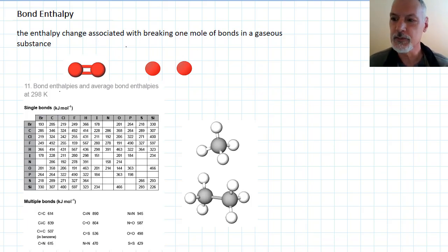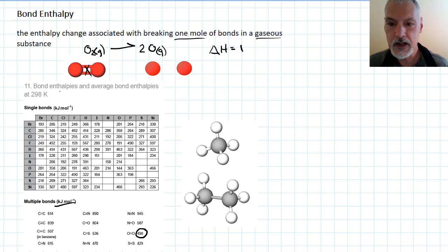First of all, what is a bond enthalpy? It's the energy associated with breaking one mole of bonds in gaseous species. So for instance, if I take oxygen gas, O2, and I break that bond that exists between them, that double bond, I'll end up with two individual atoms of oxygen. The energy associated with doing that is in my IB data booklet, 498 kilojoules per mole. The other thing to note is that bond breaking is an endothermic process. Positive value requires energy to break bonds.